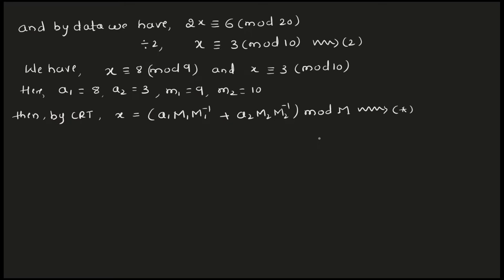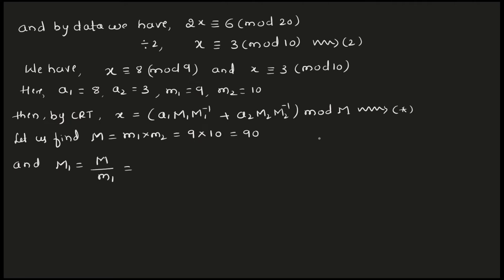We need to find the values. First, find capital M: M equals M1 times M2, which is 9 times 10, so M is 90. Capital M1 equals capital M divided by small M1, which is 90 divided by 9, so M1 is 10. Capital M2 equals M divided by small M2, which is 90 divided by 10, so M2 is 9.